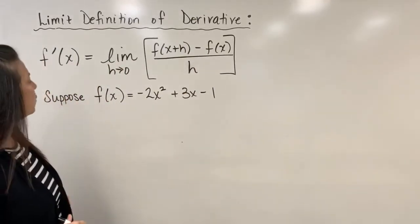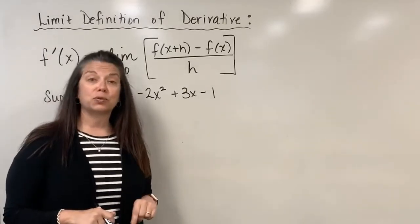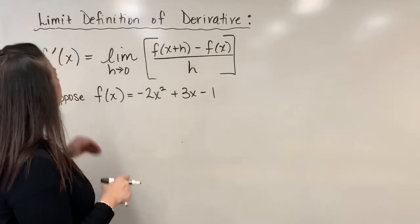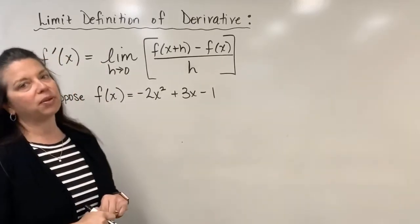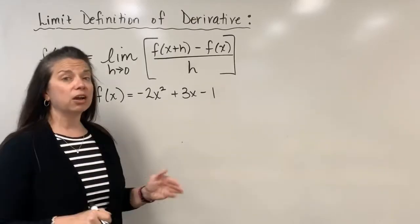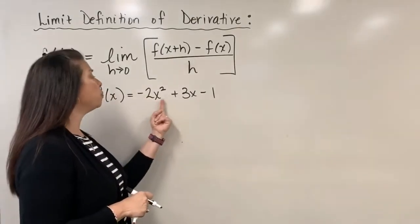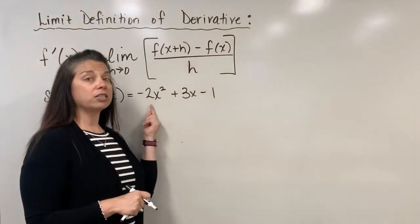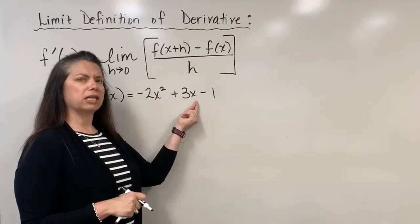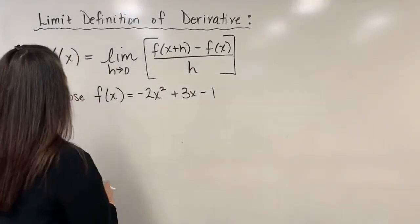Suppose we have f of x is equal to negative 2x squared plus 3x minus 1, and what we want to do is find f prime of x for this particular function. We've got to be very careful because this is a quadratic — it has two places where we need to put in a new input that looks like x plus h.